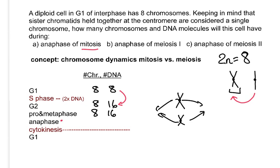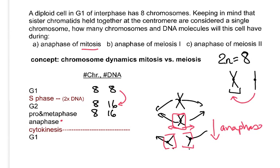It's anaphase where something interesting happens — the sister chromatids actually split apart. As they move to opposite poles, you've basically doubled the number of chromosomes. Each formerly replicated chromosome is now considered two separate chromosomes. So anaphase of mitosis is where you get the doubling in chromosome number, giving you 16 chromosomes and 16 DNA molecules. Then cytokinesis splits the cell in half.